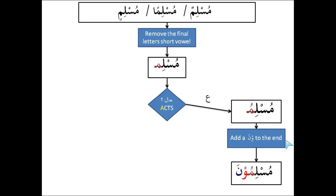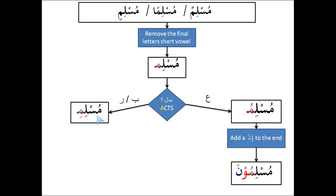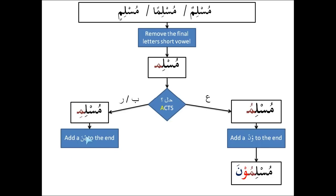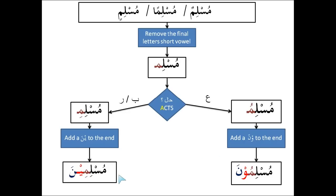If on the other hand the word is either منصوب or مجرور — so مسلمًا is منصوب, مسلمٍ is مجرور — then instead of putting a ضمّة on the ميم, we would put a كسرة under the ميم, and then we would add ياء with a سكون and نون with a فتحة to the end of the word, forming مسلمين.